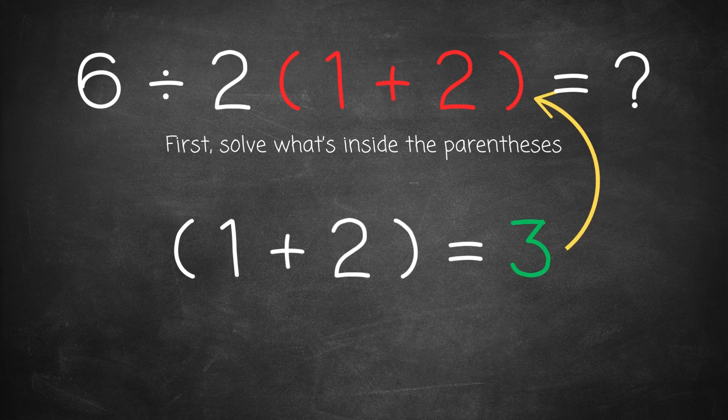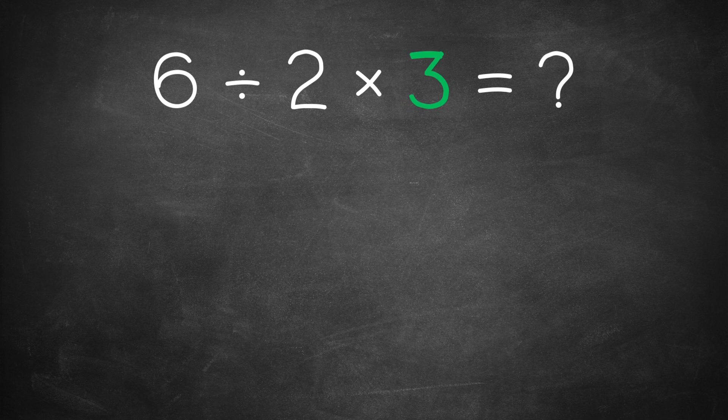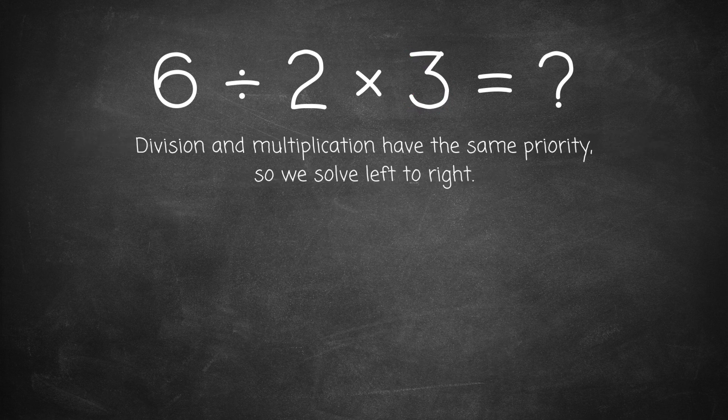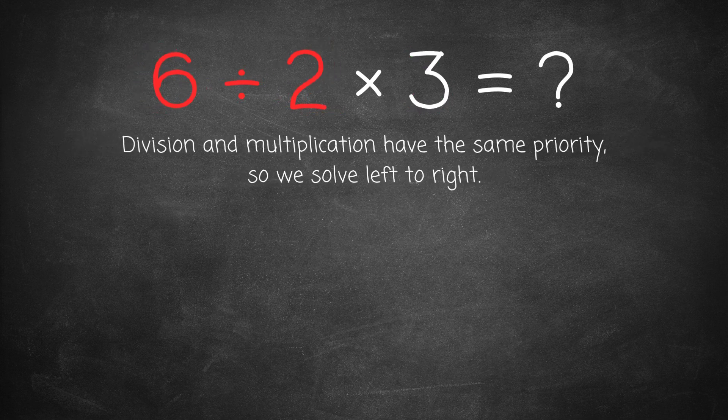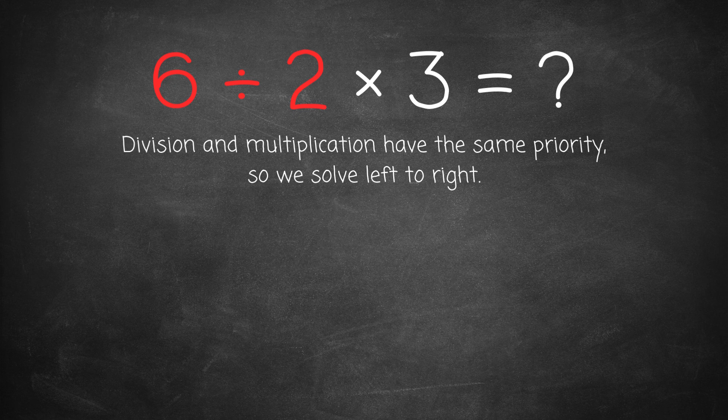Now our equation is 6 divided by 2 times 3. Remember division and multiplication have the same priority so we solve from left to right.